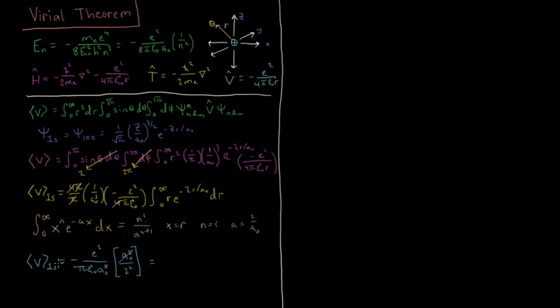And then this is going to give us the final result of minus e squared over 4 pi epsilon naught a naught. And if you'll notice here, we have our energy in terms of the quantum number n, for this case 1 over n squared, our n is 1 for the 1s orbital, so this is just a 1. So our energy is, total energy is minus e squared over 8 pi epsilon naught a naught. And if you'll notice, this energy down here is equal to 2 times the expectation value for the total energy for the 1s orbital.